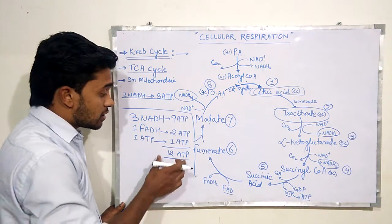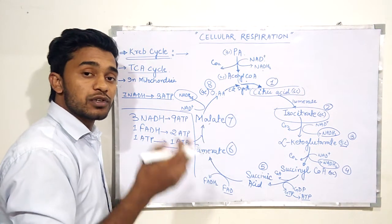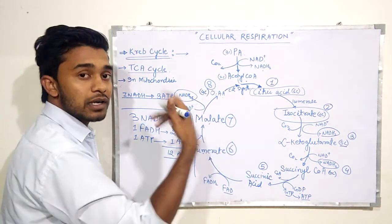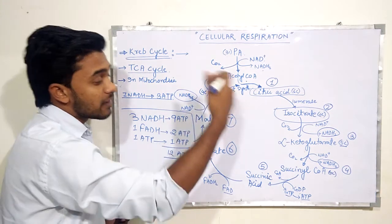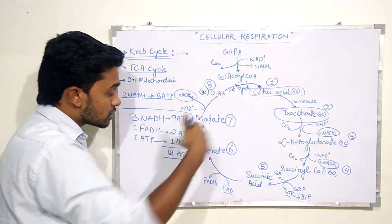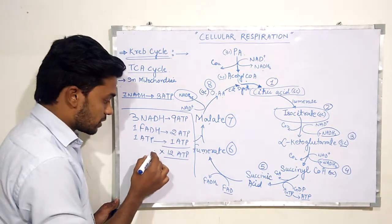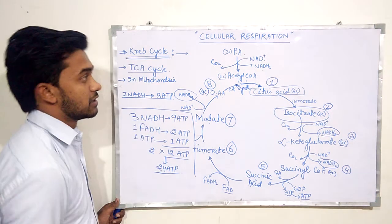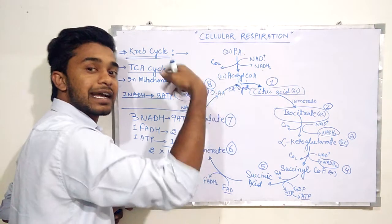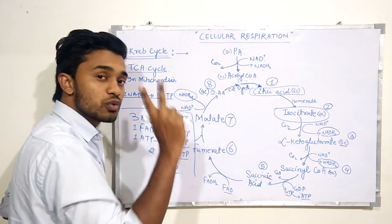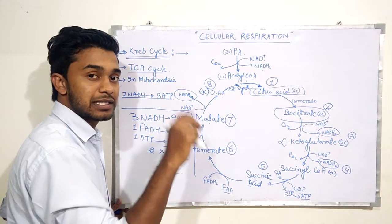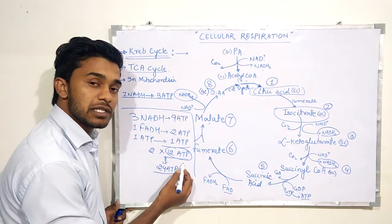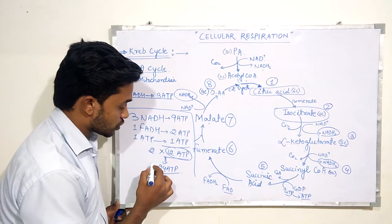These 12 ATP are gained from one Krebs cycle. However, since glycolysis produces two pyruvic acid molecules, two Krebs cycles occur. One Krebs cycle from one pyruvic acid produces 12 ATP, and another Krebs cycle from the second pyruvic acid produces another 12 ATP. So we multiply 12 by 2 to get 24 ATP total from two complete Krebs cycles.